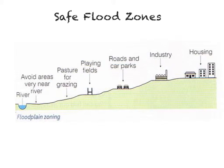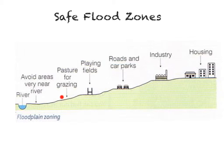The final strategy relates to safe flood zones, which are soft engineering strategies. This diagram illustrates their application. With the Mississippi River flowing through, no building work would be permitted immediately beside the river because that area has a high risk of flooding. Further away there is pasture for grazing and playing fields — these are ideal because the land is flat and fertile. If these areas flood it may cause short-term damage, but overall it doesn't cause massive destruction, and when the flood waters recede the area returns to its normal state.